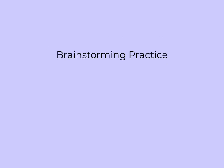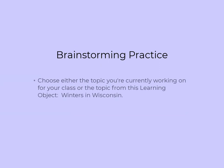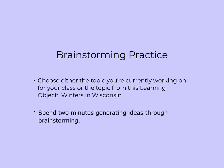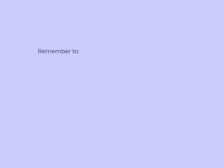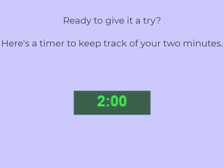It's time to practice. Choose either the topic you're currently working on for your class, or the topic from this learning object: Winters in Wisconsin. Spend two minutes generating ideas through brainstorming. Remember to relax, take your time, and use your brainstorming notes. Ready to give it a try? Here's a timer to keep track of your two minutes.